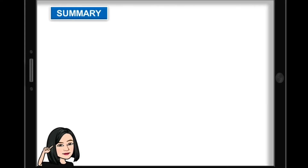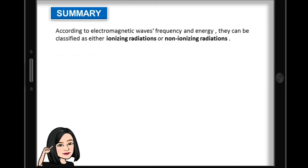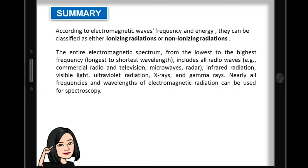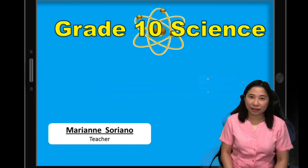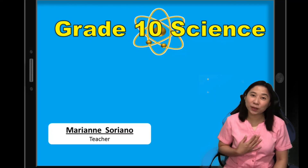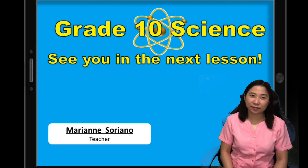To summarize: according to their frequency and energy, electromagnetic waves can be classified as either ionizing or non-ionizing radiation. The entire electromagnetic spectrum, from lowest to highest frequency, includes radio waves, microwaves, infrared radiation, visible light, ultraviolet radiation, x-rays, and gamma rays. Nearly all frequencies and wavelengths of electromagnetic radiation can be used for spectroscopy — the study of the interaction between matter and electromagnetic radiation as a function of wavelength or frequency. I hope you learned and enjoyed our lesson. This is Ma'am Marian Soriano. See you in the next lesson!